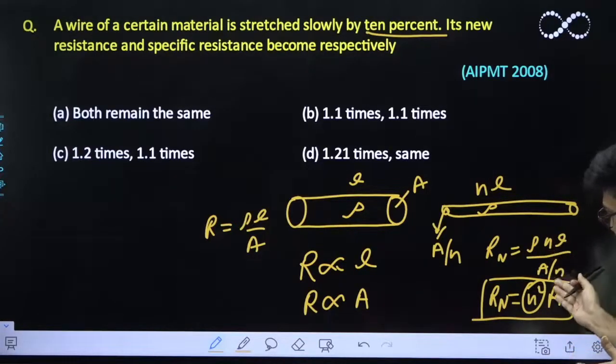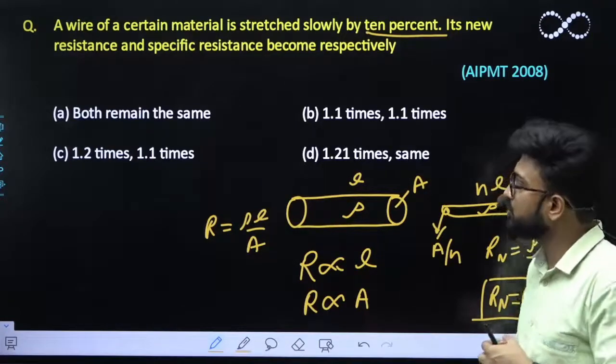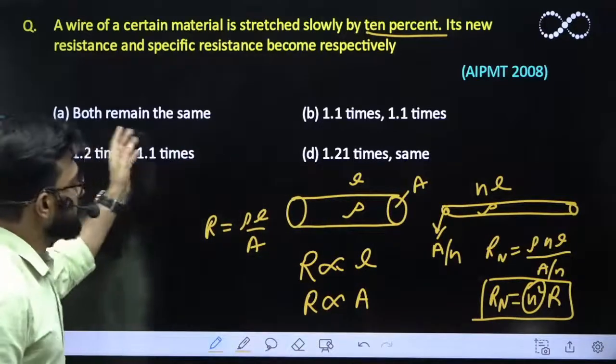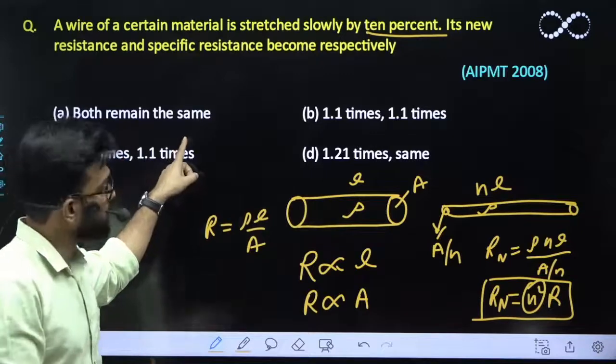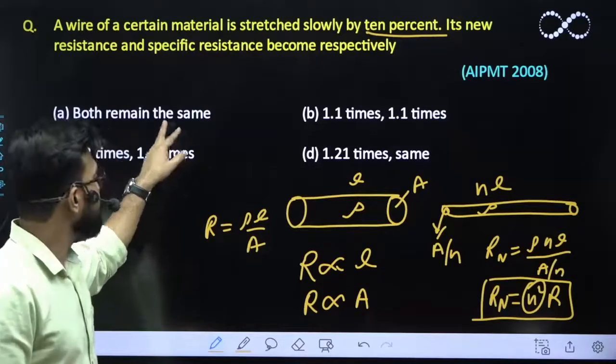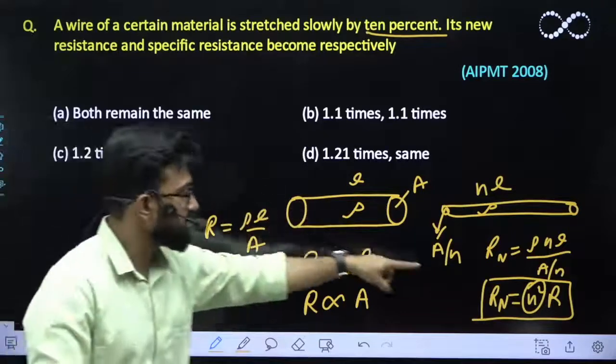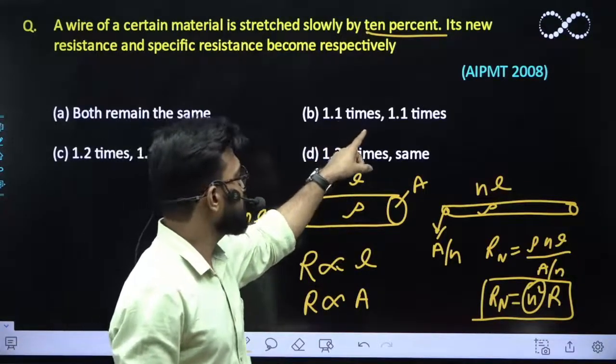So we will be studying the options. First it says both resistivity and resistance will remain same which is also not true because the resistivity will remain same but resistance here is increasing to a certain proportion. It becomes 1.1 times - if it does not do so. But here it says specific resistance increases by 1.1 times which is also wrong, this statement is wrong.